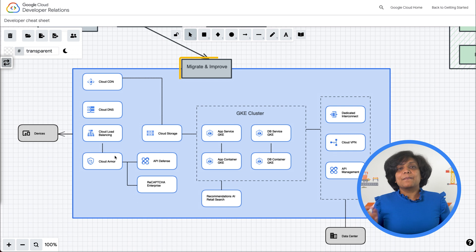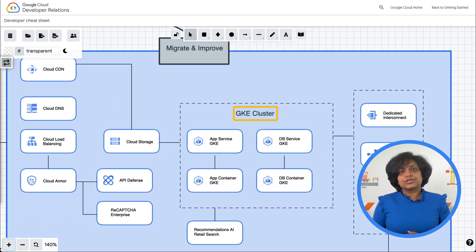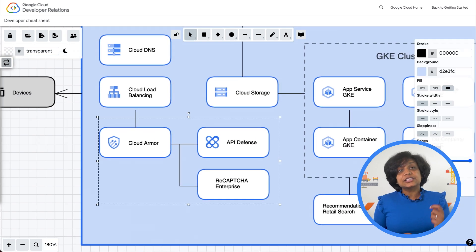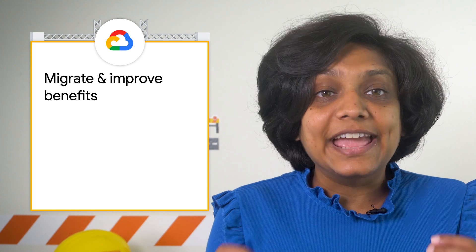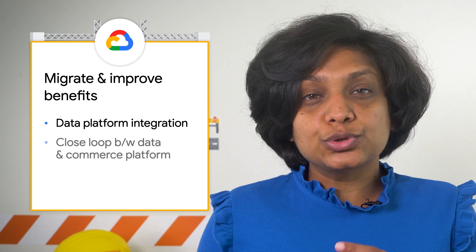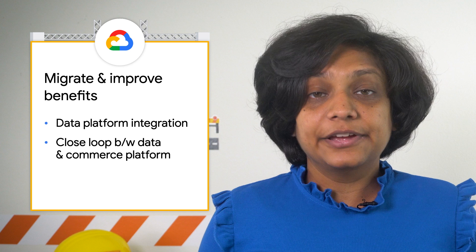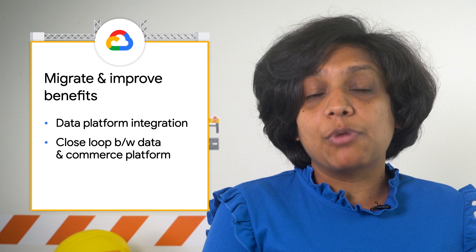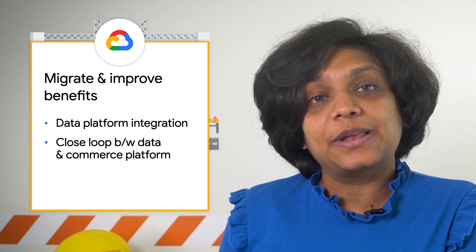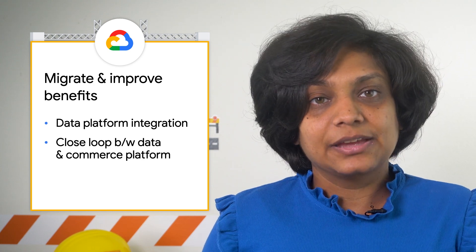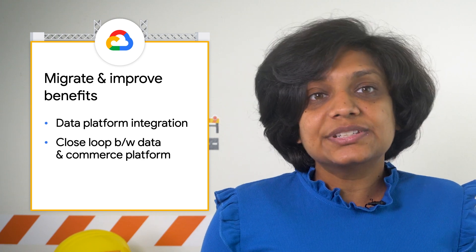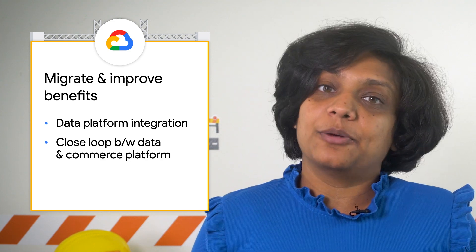The build-your-own migrate-and-improve architecture provides you the flexibility to add features and the ability to scale easily by adding more GKE clusters during traffic spikes. It also offers application security using a combination of Cloud Armor, Load Balancer, ReCAPTCHA, and API Defense. From the business perspective, this approach enables integration with the data platform, creating a strong closed loop between the data platform and the commerce platform. You can collect first-party customer data from shopper interactions to use in your data platform for predictive analytics and marketing activation, and gain insights to offer personalized shopping experiences and promotions. We've got a link to the documentation below to help you out.